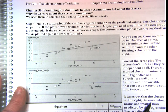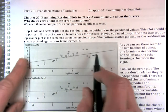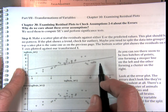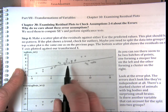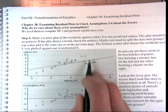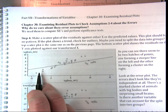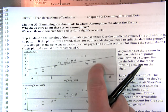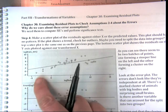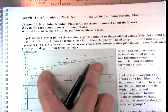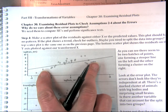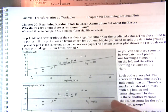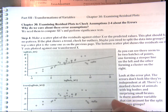It also violates homoscedasticity because the errors tend to be smaller in the middle and bigger at the ends. Usually when it violates one assumption, it violates a bunch of things. So what do we do? It's a problem if you want to make inferences, because we need those assumptions to compute the standard errors and to perform all our significance tests.